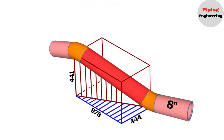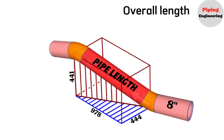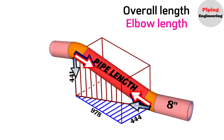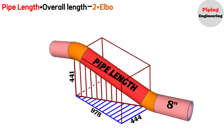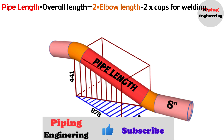To determine the length of a pipe section between two elbows in a pipeline, we will follow these steps: calculate the overall length and the center-to-center distance between the two elbows, determine the angle, length of the elbows, and their takeoff dimensions, then subtract the elbow lengths and welding gaps from the overall length. The formula is: pipe length equals overall length minus two times elbow length minus two times gap caps for welding. We will perform all these calculations step-by-step on this 8-inch pipeline section.